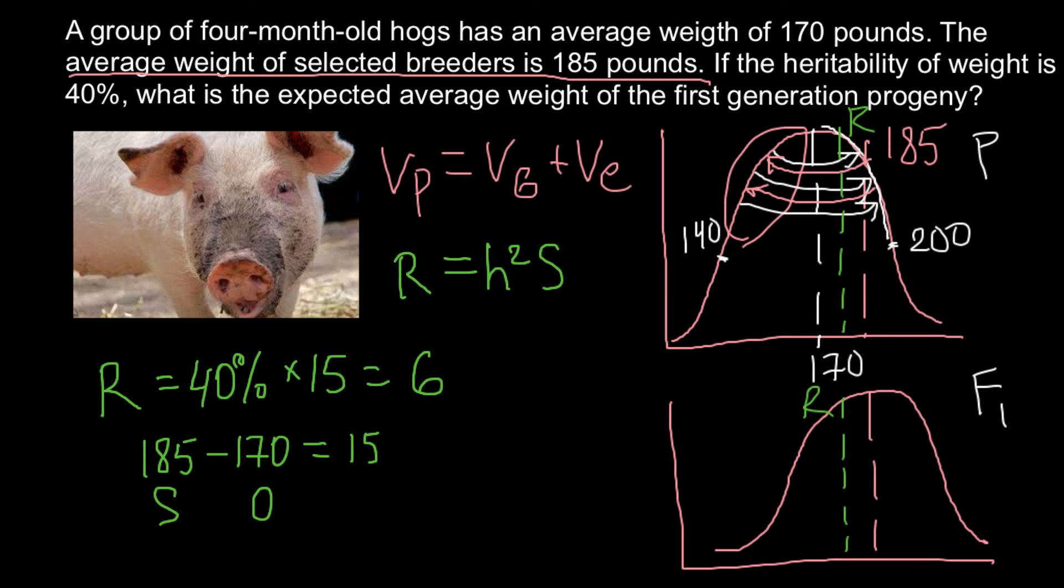So the following generation would have plus 6 pounds. So originally we had 170 pounds plus 6 pounds, so the next following generation, F1 generation, mean weight would be 176 pounds. And this is going to be our answer to our problem. So this mean would be 176, and this is going to be the F1 generation.